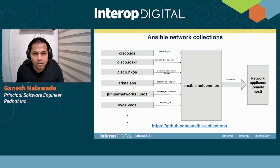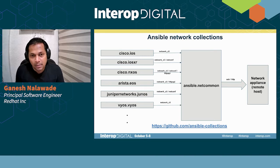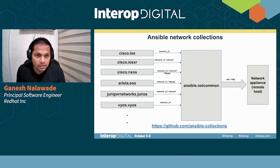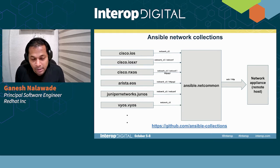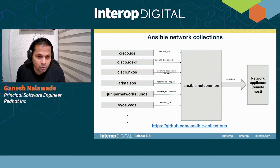Moving on to Ansible Network Collections specifically. Previously, all platform cores were part of a single package — Ansible in 2.9. Going forward in 2.10, they have been segregated into individual platform collections. So Cisco IOS has all the modules and plugins specific to the IOS platform. Similarly, there are individual collections for Cisco IOS XR, NXOS, Juniper JunOS, and so on.